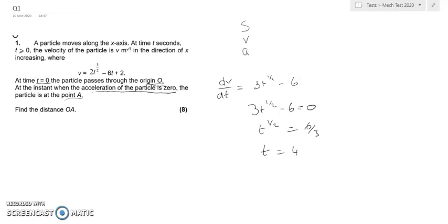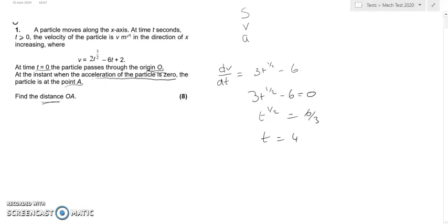Now we're told to find the distance from O to A, so we're asked about displacement. In order to find that from velocity, we need to integrate the velocity with respect to time.